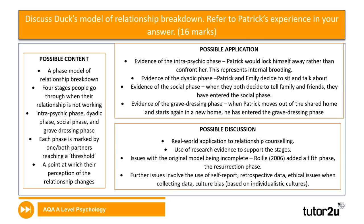For the 16-marker on relationships, the mark split is six AO1, four AO2, and six AO3. The AO3 is worth less than in a standard 16-marker because four marks have shifted to AO2. The AO1 content covers Duck's model of relationship breakdown — a phase model with four stages: intrapsychic phase, dyadic phase, social phase, and grave dressing phase. For each stage, elaborate and maybe give an example to demonstrate deeper understanding. Remember, you don't move on to the next stage until you've reached the threshold.